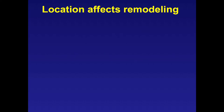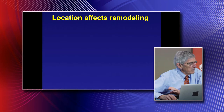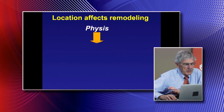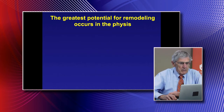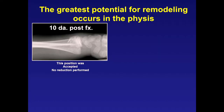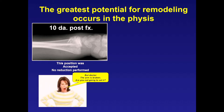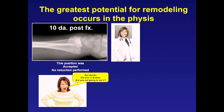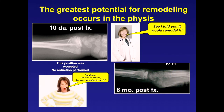Where does remodeling occur best? Closest to the physis, then the metaphysis, with very little remodeling in the diaphysis. The greatest potential for remodeling occurs in the physis. Here's a patient sent 10 days post-fracture through the physis with significant angulation. The mother wanted it set, but the doctor assured her the son had enough remodeling capacity—and sure enough, at six months it was completely remodeled. The doctor was right: tremendous remodeling with no need to 'set the bones.' The mother's response: 'You should consider a career in orthopedics.'